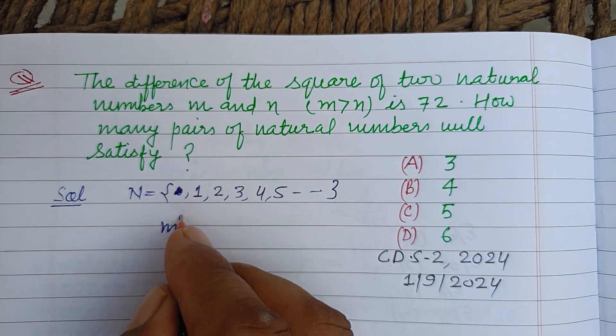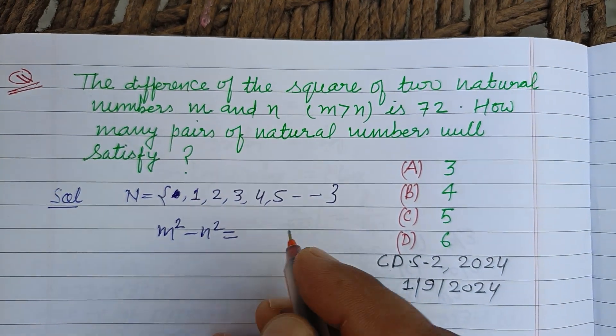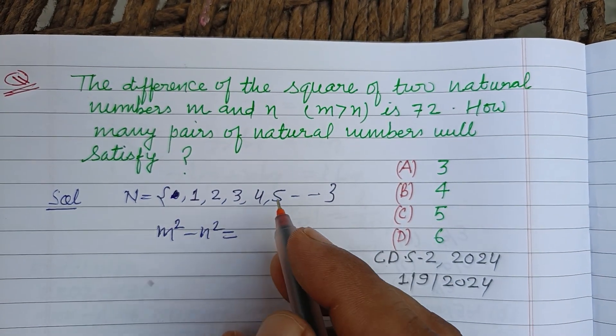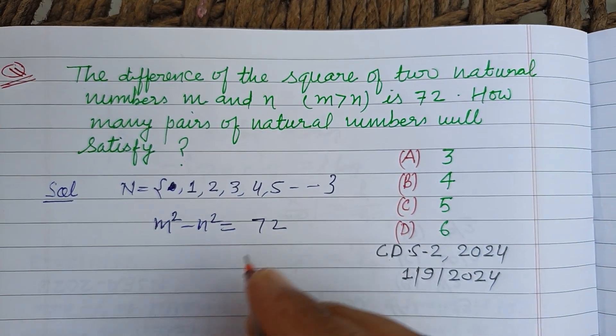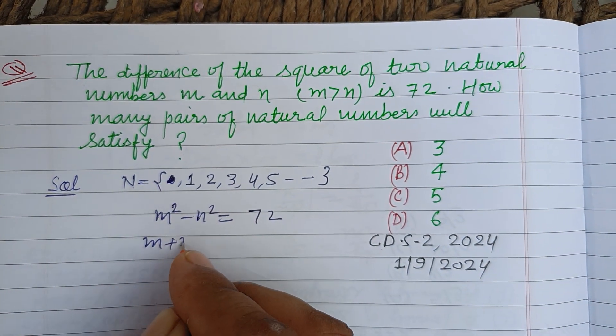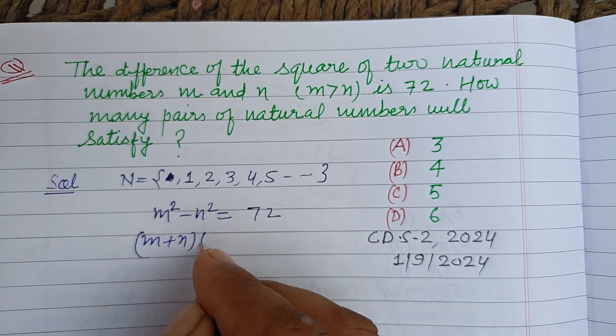Now here, the difference of two natural numbers m square minus n square equals 72. So we write them using a square minus b square equals a plus b times a minus b equals 72.